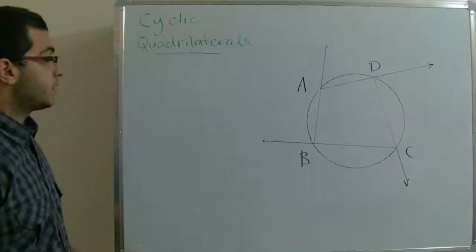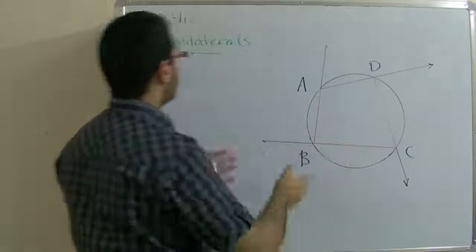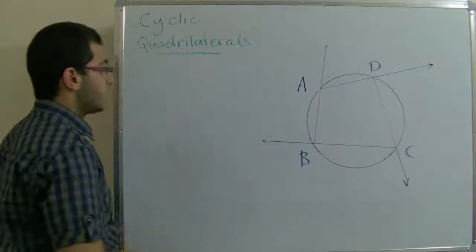Cyclic quadrilaterals are quadrilaterals which are inscribed in a circle. They are called cyclic quadrilaterals.